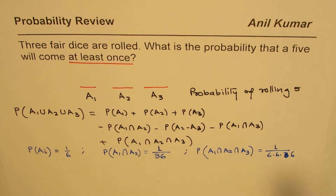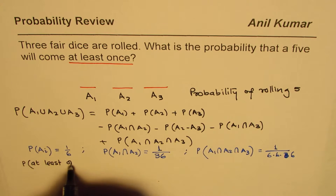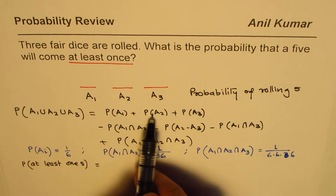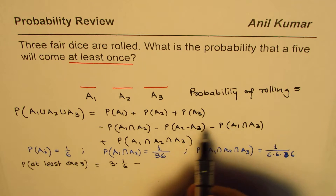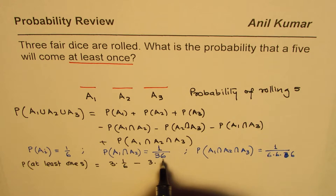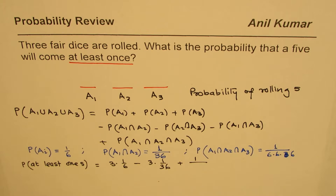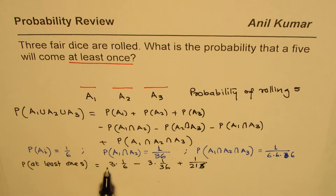Using these values, the probability of getting at least one five equals 3 × (1/6) minus 3 × (1/36) plus 1/216. There are three individual terms, three pairwise intersection terms, and one triple intersection term, giving us a common denominator of 216.